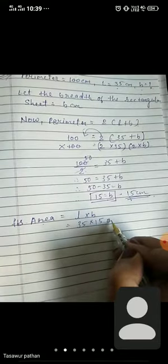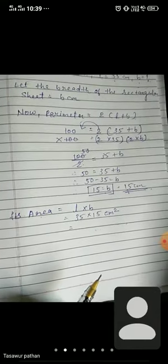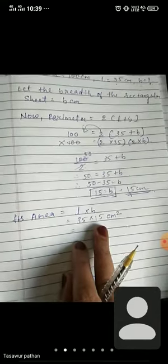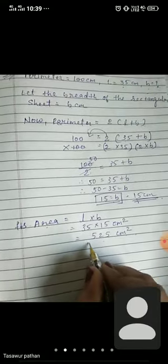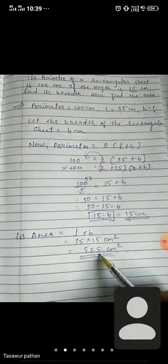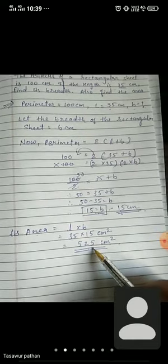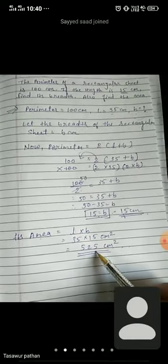In which measurement? In square measurement. If it's centimeter, we will write centimeter square. If it's meter, then meter square. Only in area. So here we will write centimeters square. 35 into 15, if you multiply these both numbers, as a product you will get 525. So the answer is 525 cm square. So here is our answer. First, our breadth is 15 cm. And area of the rectangular sheet is 525 cm square.